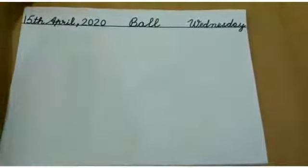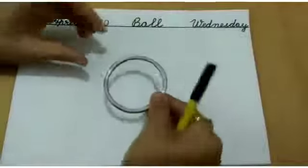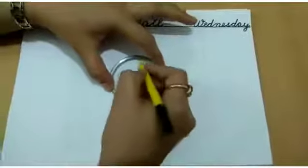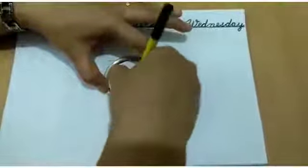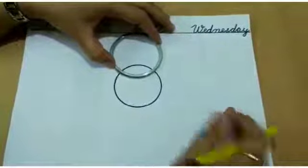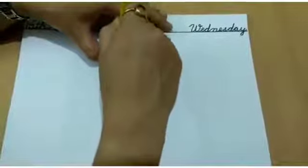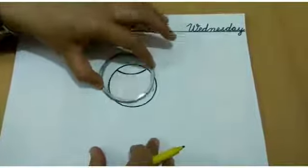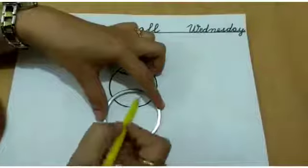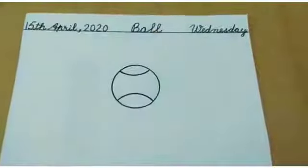Now take a bangle. Keep it in the center of the sheet. Hold it properly and draw a circle like this. Move this bangle upside to make a curve like this. After this move this bangle downside like this and draw a curve again. Now the ball is ready.